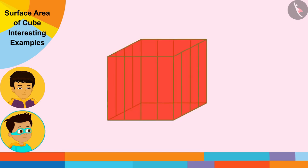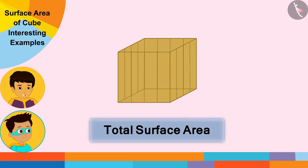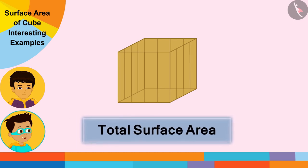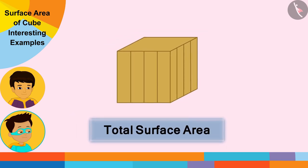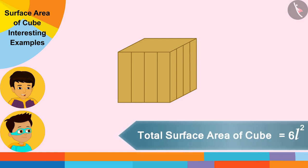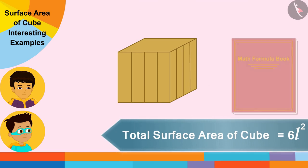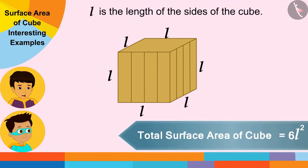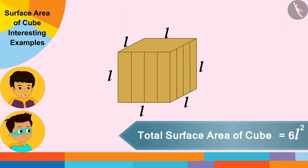The sum of all the surfaces of this cubic stool will be equal to its total surface area. Therefore we will find the total surface area of this cubic stool. This stool is cubic, and we wrote this formula for the total surface area of a cube in the formula book of mathematics, where l is the length of the sides of the cube.